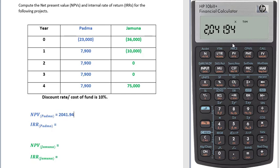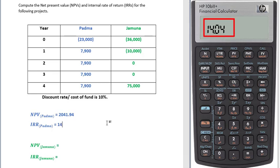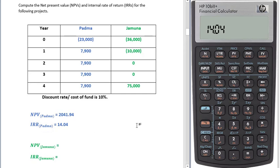To calculate IRR, as we have already put all the information, just press Shift and this button — here you can see IRR is written in orange. So IRR is 14.04 percent. Note that IRR doesn't need any funding rate or discount rate to calculate. If you individually calculate IRR, you don't need to put any discount rate or cost of fund — just put all the inflows and press Shift then this button.